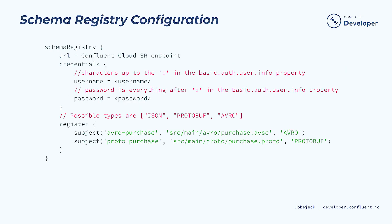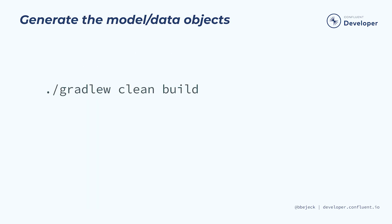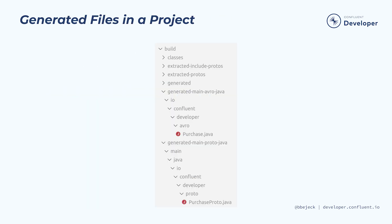Now let's put together the Gradle configuration block to connect schema registry. You set the URL field to the value from the schema registry URL property. Next, we have the credentials block. Here you'll set the credentials necessary to communicate with schema registry in Confluent Cloud. You'll split the basic auth user info field into two parts: all of the letters and numbers up to the colon will form the username, and everything after the colon will form the password field. Next up is the register block — it contains all of the information that the plugin uses to register a schema. To generate the objects from schema files, all you do is run the clean build command. And here are the files that are generated as a result of that build command.